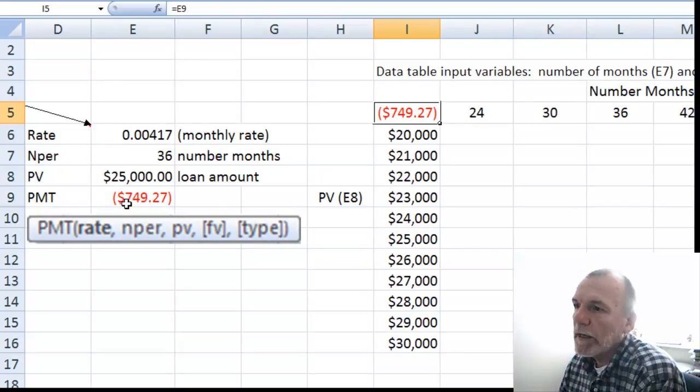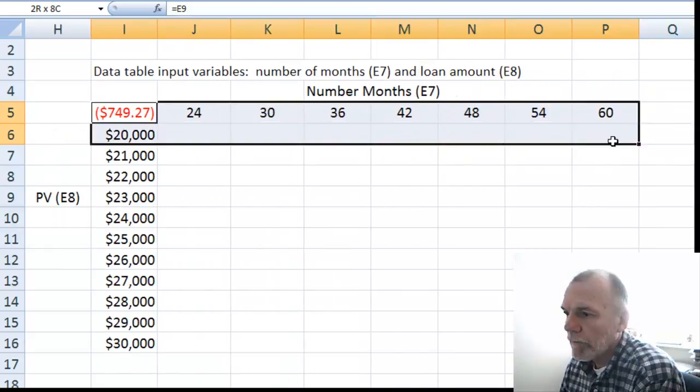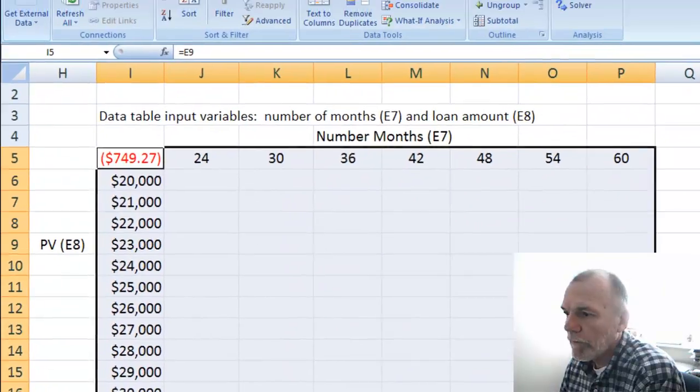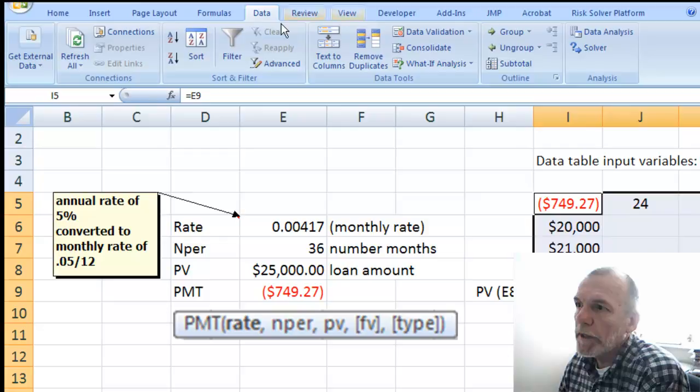Let's highlight this range. Go to the data ribbon, what if, data table.